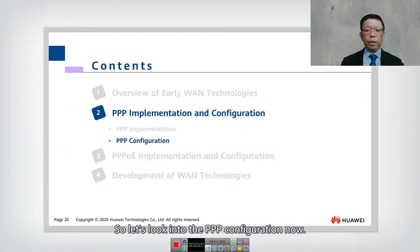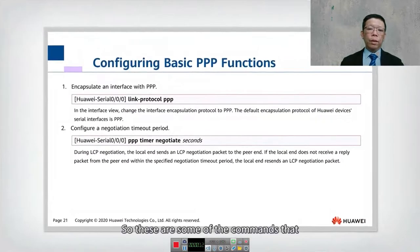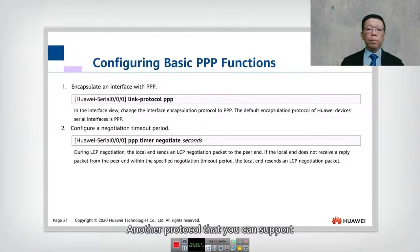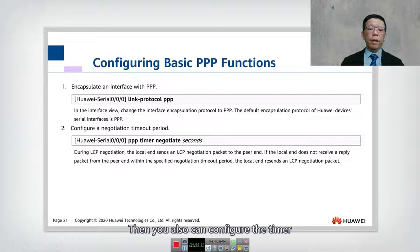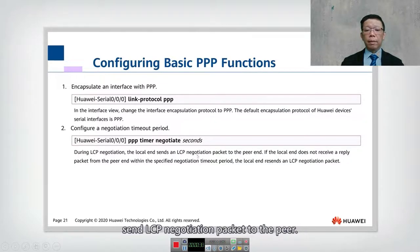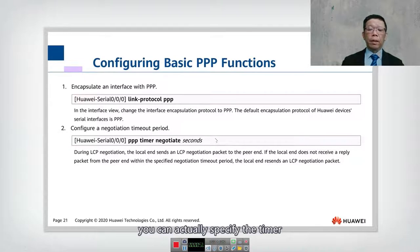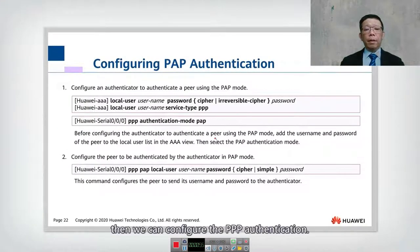Let's look into the PPP configuration. These are some of the commands you can use. On the Huawei device you can use a command called 'link protocol PPP', and by default this protocol is already configured. Another protocol supported on Huawei is Frame Relay or HDLC. You can also configure the timer, which is optional. During LCP configuration, the local end sends LCP negotiation packets to the peer; if no reply is received within the specified seconds, it will retransmit.